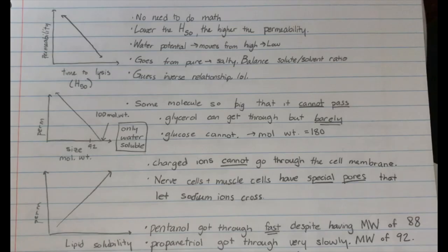So for the graphs in this, you just need to know that permeability and time to lysis, which is H50 are inversely correlated. That's one of the graphs you need to know. The second graph you need to know is that permeability will eventually hit a zero point in terms of size. And that size is a molecular weight of 100. But this only applies for polar molecules, meaning molecules that are hydrophilic.